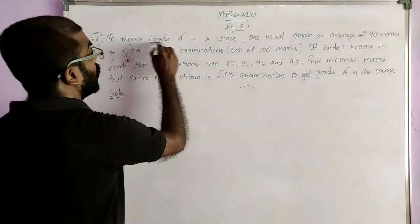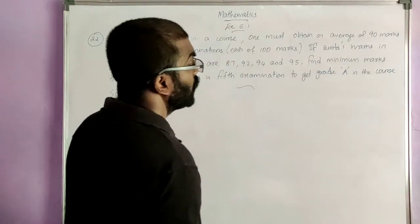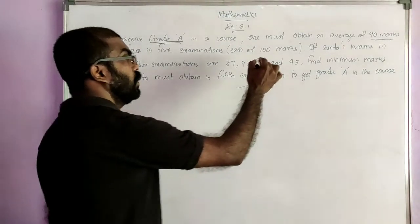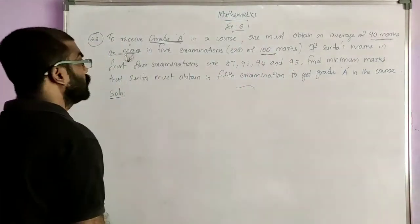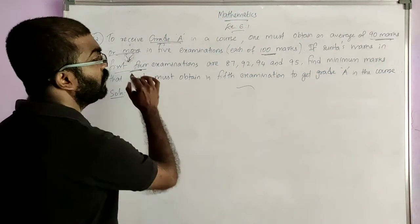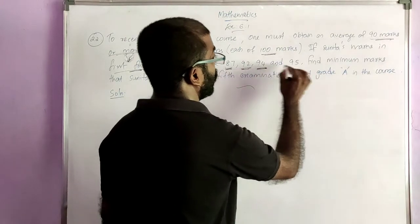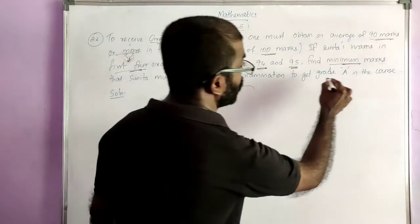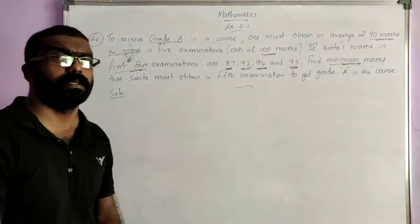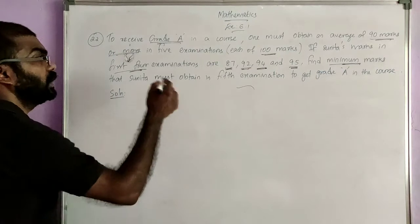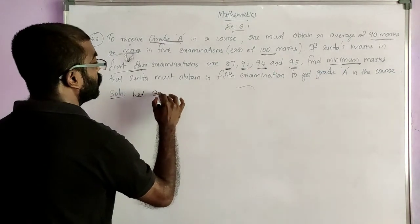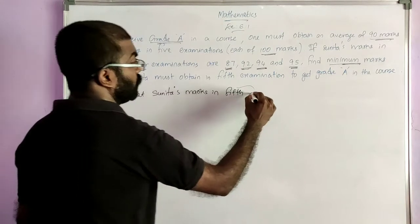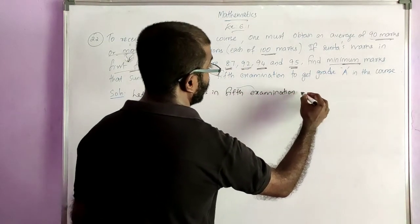The next question: to receive grade A in a course, one must obtain an average of 90 marks or more in 5 examinations, each of 100 marks. If Sunidha's marks in the first 4 examinations are 87, 92, 94 and 95, find the minimum marks that Sunidha must obtain in the 5th examination to get grade A in the course.